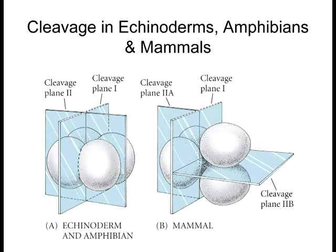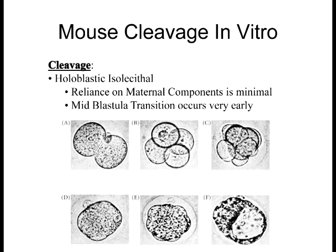In mammals, the cleavage pattern is different from amphibians: instead of cells on the same plane initially, you get one cut and then the next division is perpendicular to it. After about eight cells form, cell adhesion molecules increase and the cells become super compacted together. These cells then pull in water through osmosis and form the blastocoel. The cells on the perimeter — the trophoblast — become the extra-embryonic tissue such as the placenta and umbilical cord, while the inner cell mass becomes the actual embryo itself.